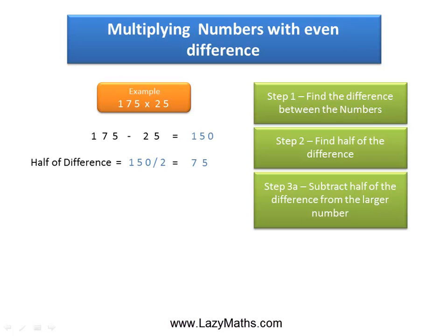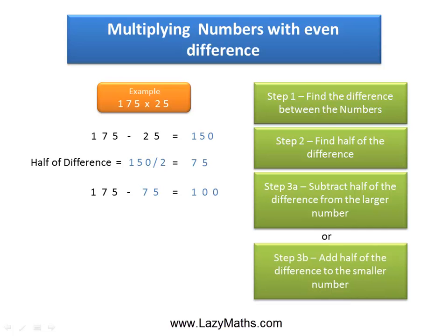The next step involves either subtracting half of that difference, which is 75, from the larger number 175, which gives us 100. Or we can add the half of the difference, which is 75, to the smaller number 25, which gives us 100. Either way we will get the same answer, which is 100.